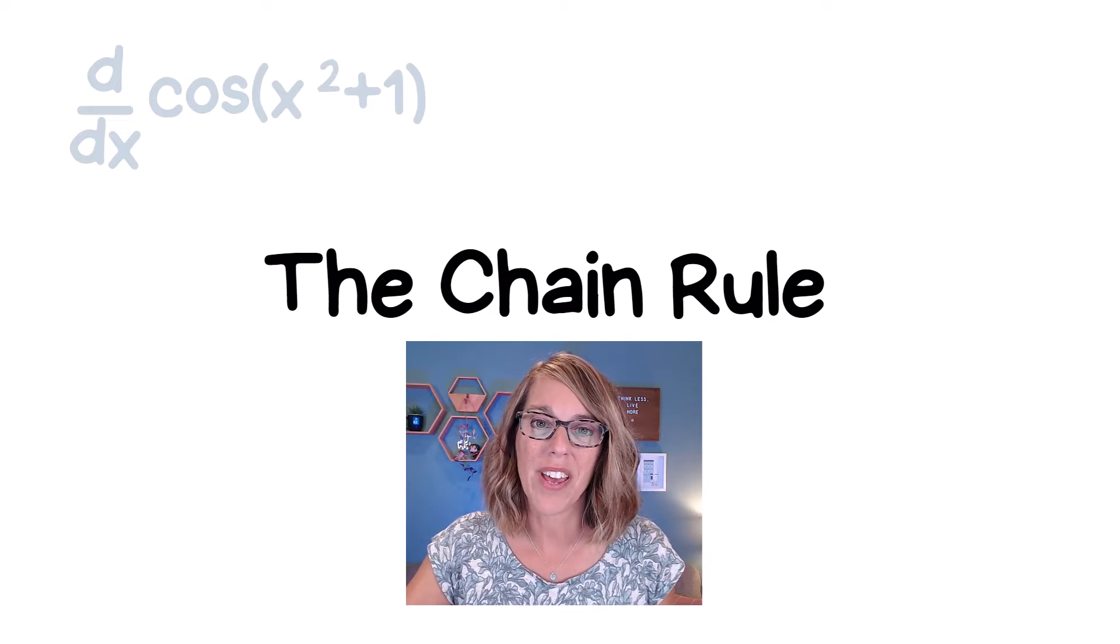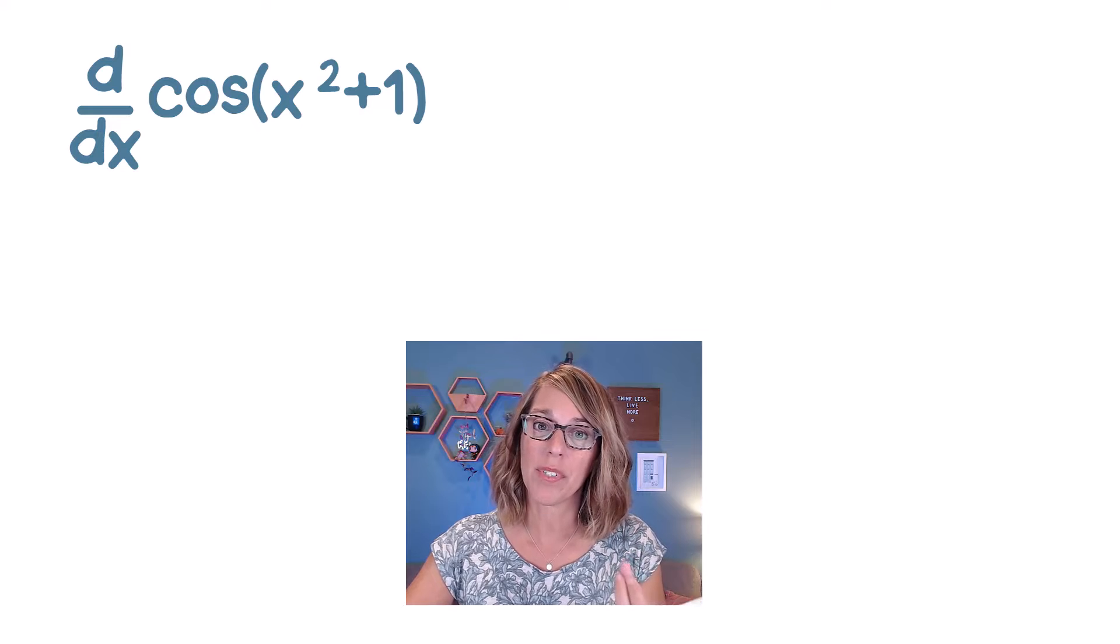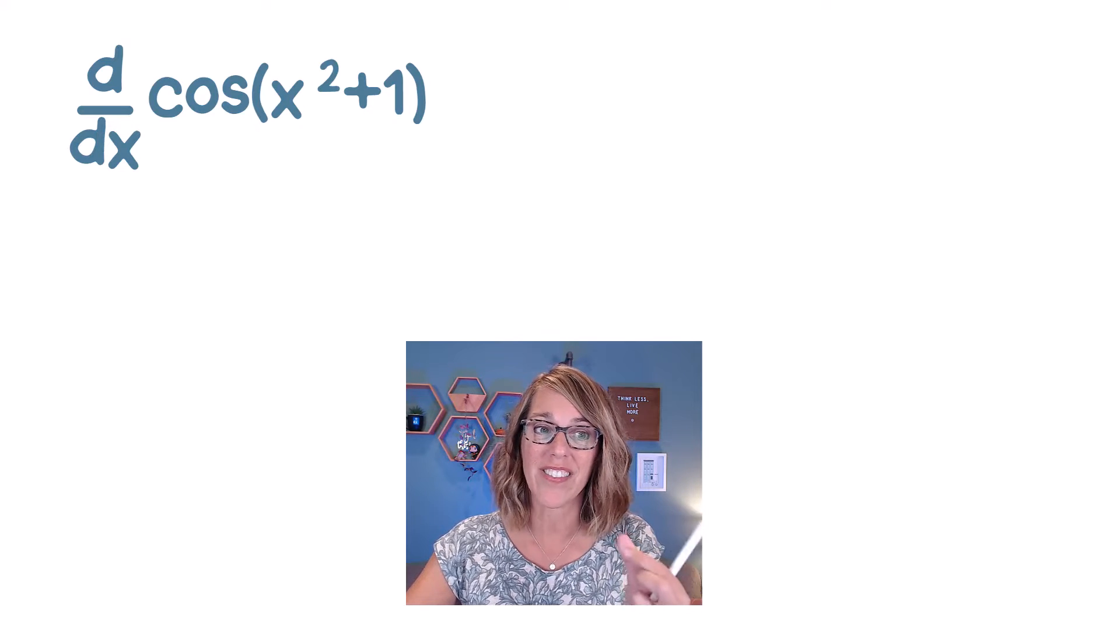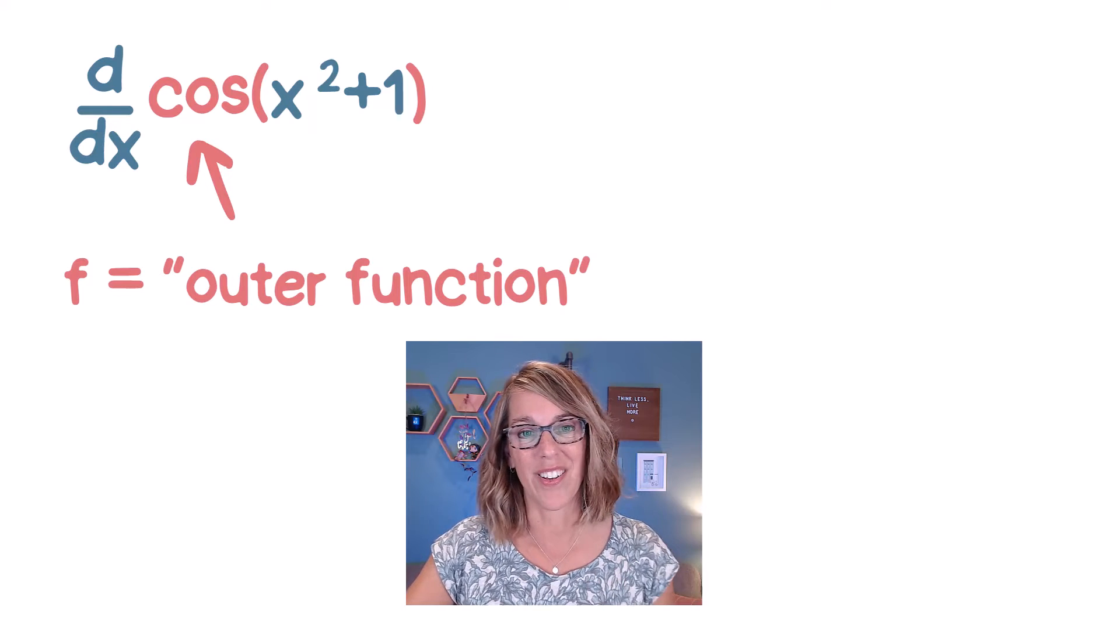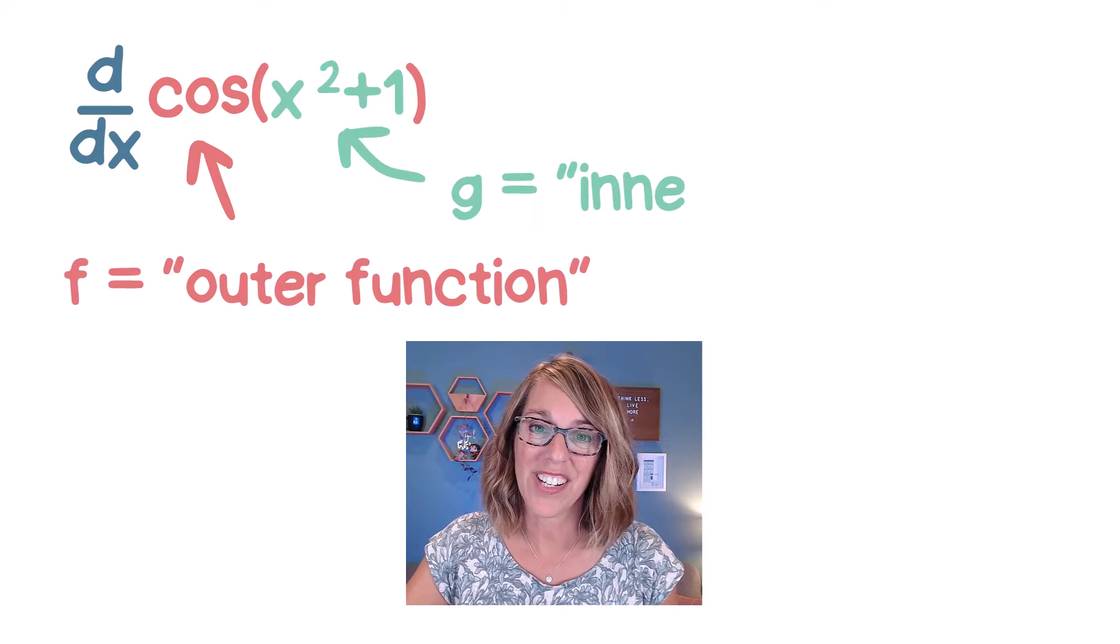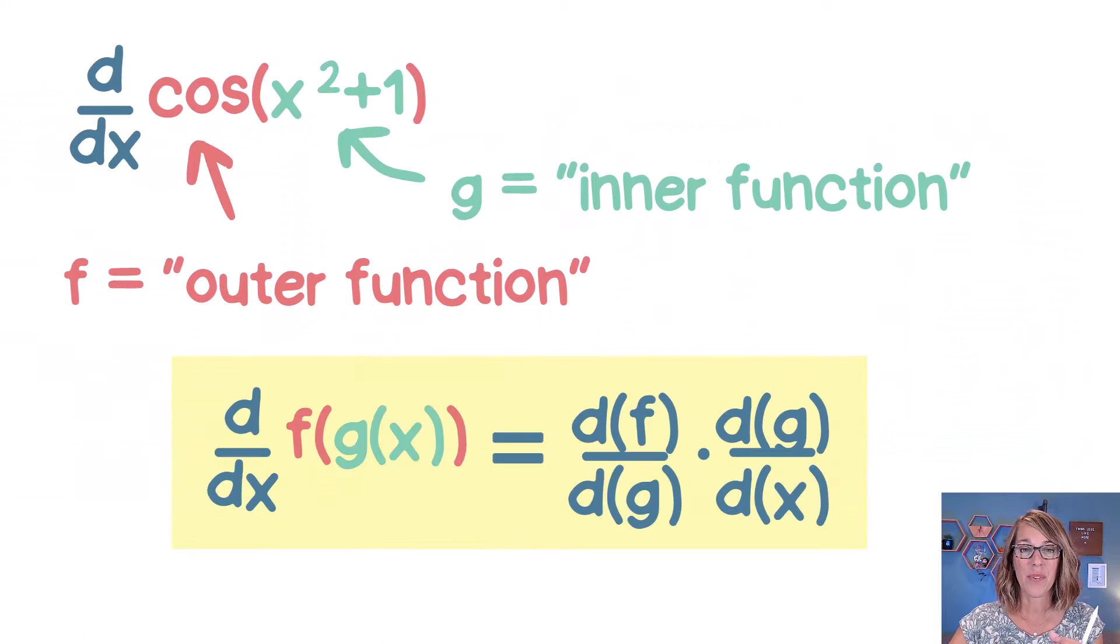We're going to do a couple of examples of the chain rule. The chain rule applies to a layering or composition of functions like we've got in this example. In this example our outer function is the cosine and the inner function is that x squared plus 1. When we apply the chain rule we've got to do it in a really particular order.